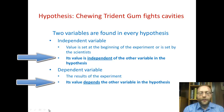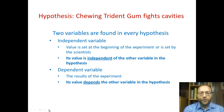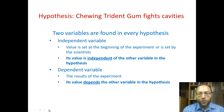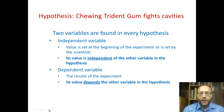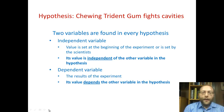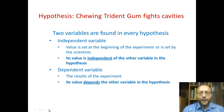If you look at the hypothesis, there are two things that can change — two variables. One is the type of gum, because you could chew Trident gum, you could chew another brand of gum, or you could not chew any gum at all. The second variable is that this gum will fight cavities, or it may fail to fight cavities. And you have to ask yourself which is dependent on the other.